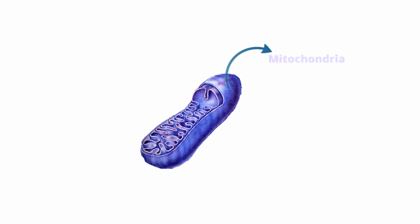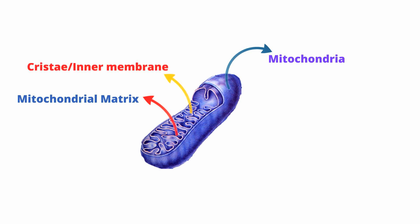Let's begin by talking about where the electron transport chain takes place. The ETC is present in the inner mitochondrial membrane. The inner mitochondrial membrane is important because it is selectively permeable to hydrogen, sodium, and potassium. This selective permeability is vital because it allows for the creation of a hydrogen ion gradient, which is the engine for ATP production. In addition, there are folds in the inner mitochondrial membrane called cristae. Cristae increase the surface area and the ability to produce ATP by allowing more complexes to fit in the inner mitochondrial membrane.